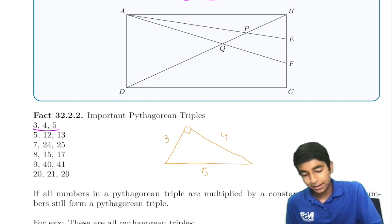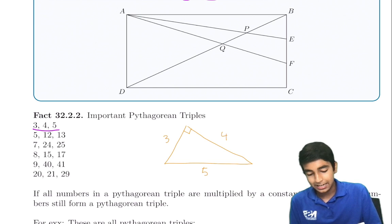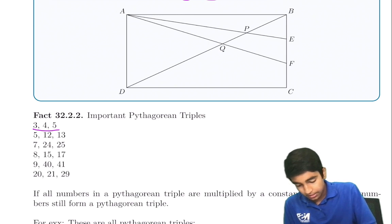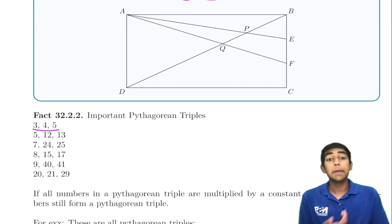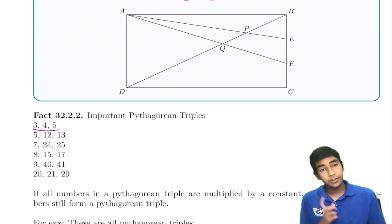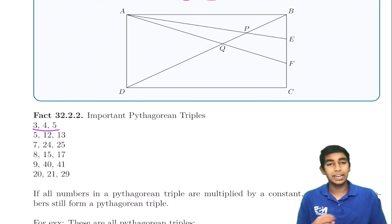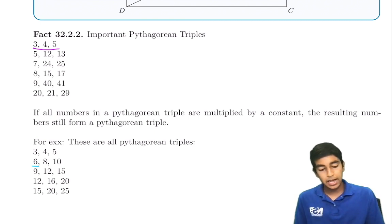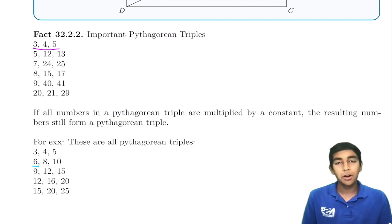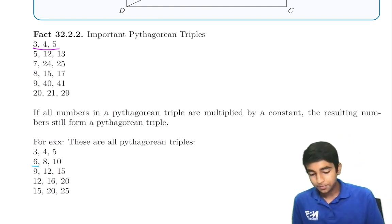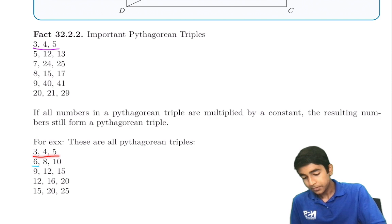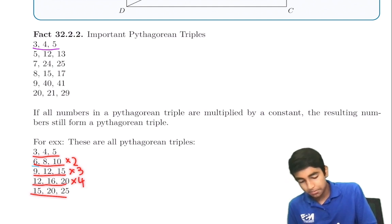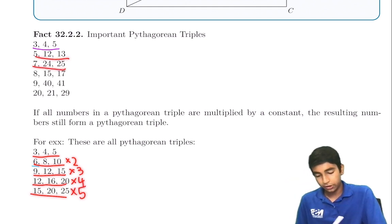Other important Pythagorean triples include 5, 12, 13; 7, 24, 25; 8, 15, 17; 9, 40, 41; and 20, 21, 29. If all numbers in a Pythagorean triple are multiplied by a constant, the result is still a Pythagorean triple — so 6, 8, 10 and 9, 12, 15 are all multiples of 3, 4, 5. This means we don't always need to apply the theorem directly — for example, seeing sides 20 and 29 in a right triangle lets us immediately identify the third side as 21.